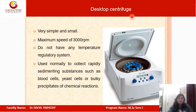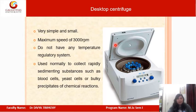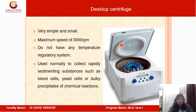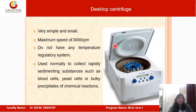Desktop centrifuges are simple and small in size. The maximum rotor speed for this type is 300 RPM. They do not have any temperature regulatory system and are generally used to collect rapidly sedimenting substances such as blood cells, E. coli cells, or bulky precipitates of chemical reactions.